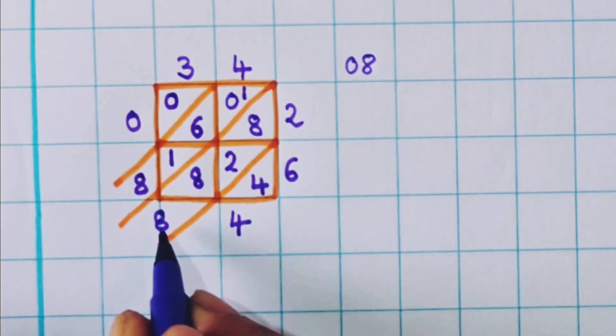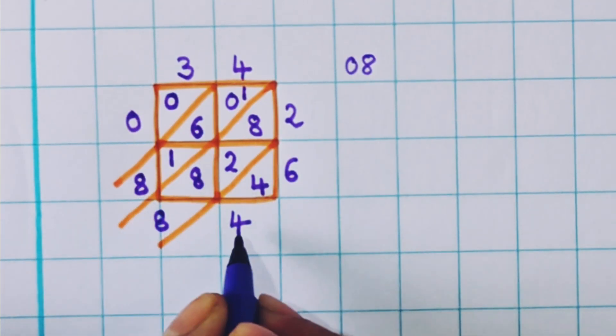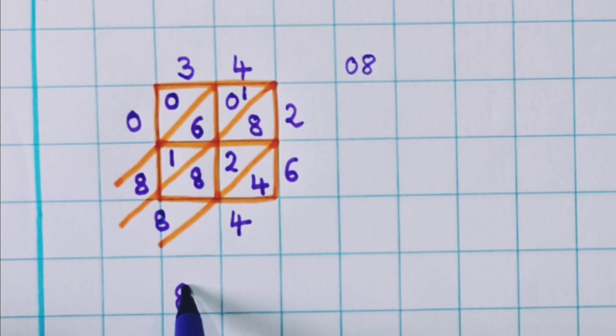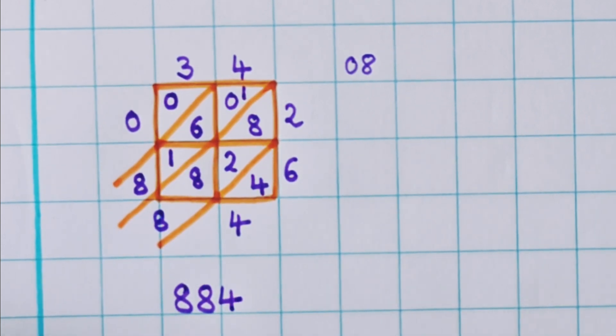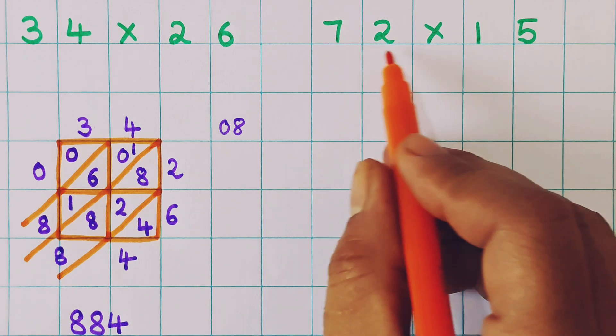So now what is the answer? The answer is 8, 8, 4. That is 884. Now similarly let's see the next problem.